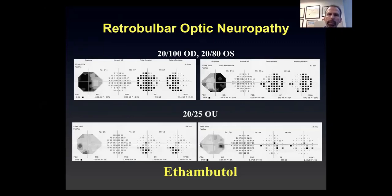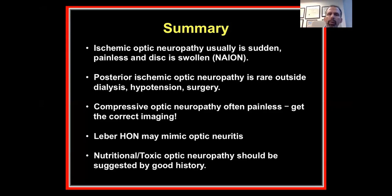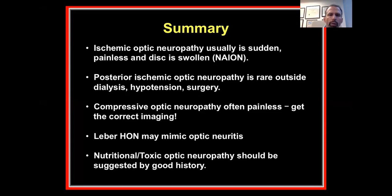In summary: ischemic optic neuropathy is usually sudden, painless, disc usually swollen — most commonly NAION in the US. Posterior ischemic optic neuropathy with sudden vision loss, normal disc, is rare outside of dialysis, hypotension, and surgery with obvious hypoperfusion. Compressive optic neuropathy is usually painless — make sure you get the correct imaging with contrast and fat suppression. Leber hereditary optic neuropathy may mimic optic neuritis, but the clue is the other eye being affected within a short time. Nutritional and toxic optic neuropathy should be suggested by taking a good history.